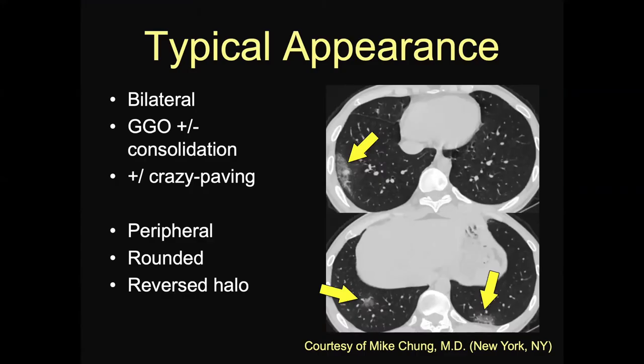Let's start with the typical appearance: bilateral, predominantly ground glass opacities with or without consolidation. As the organizing lung injury progresses, you start to see more and more consolidation as you fill more alveoli with organization, collagen, and inflammation. Some patients also have a crazy paving appearance. It's typically peripheral. Some of the opacities may be rounded, and you may see a reversed halo sign. With this first example, we see peripheral areas of ground glass opacity — the one in the right lower lobe has a little solid component but is predominantly ground glass, and it's bilateral.